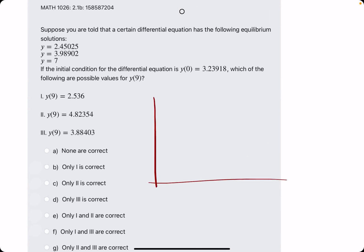In this problem, they tell us we have a differential equation with the following equilibrium solutions. And they're kind of strange, very exact: 2.45025, 3.98, and then y equals 7. So we have three different equilibrium solutions.